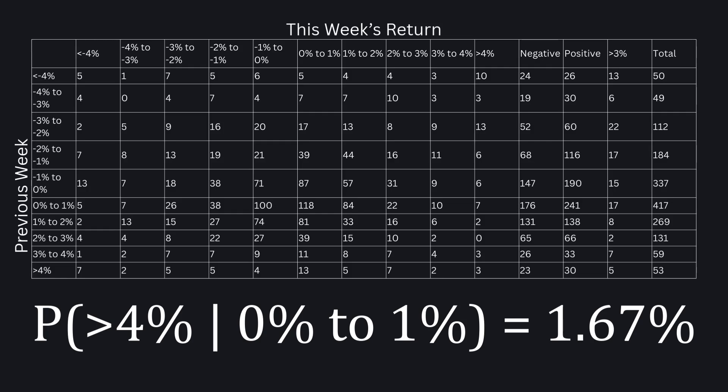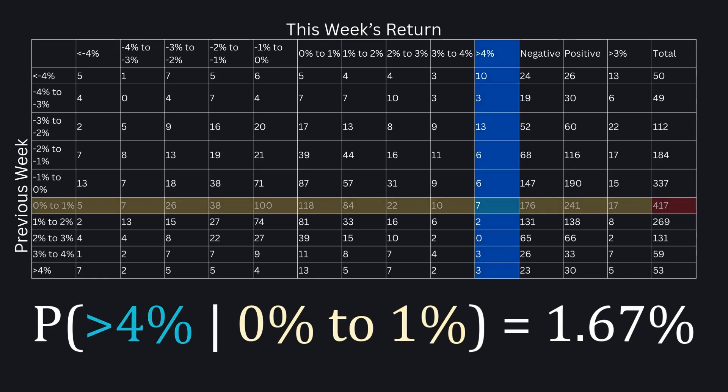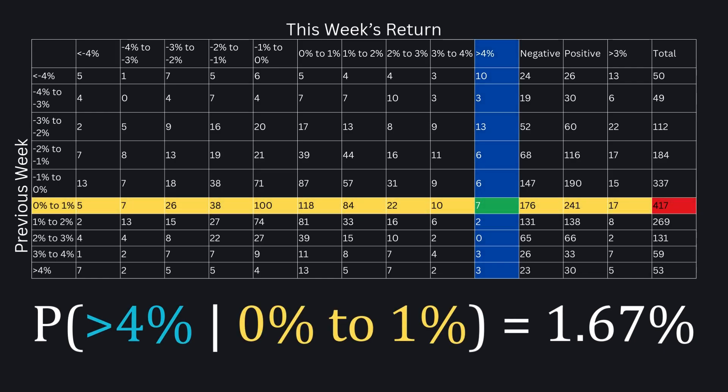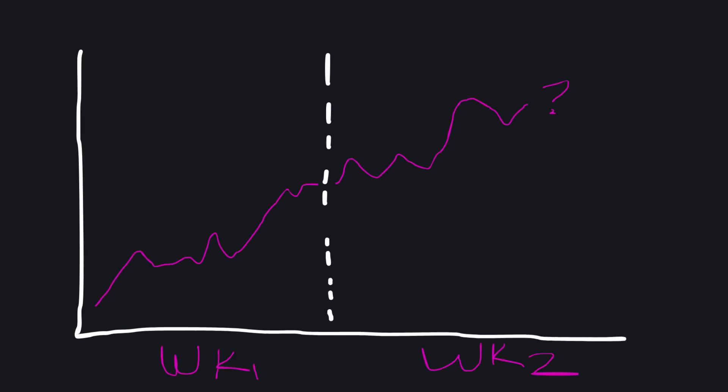We have calculated the conditional probability of a stock going up X percent given that the stock went up Z percent last week. However, what if we want to know what the expected return will be given the previous stock moves? This is conditional expectation, or the expected mean value of a stock's return given some known condition. This probability theory can help models understand how assets behave under specific scenarios.